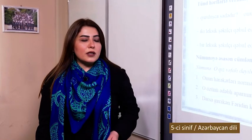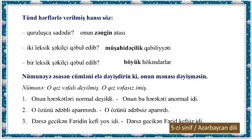Change the sentence according to the example so that its meaning stays the same. Example: 'That girl was not faithful' → 'That girl was faithless.' As you can see, it is possible to preserve the sentence's meaning by changing the word. Next sentences: 'His actions were not normal' → 'His action was abnormal.' 'He did not behave politely' → 'He behaved impolitely.' 'Farid, who was late to class, was not in good spirits' → 'Farid, who was late to class, was in low spirits.'